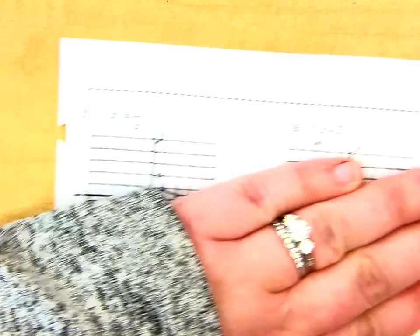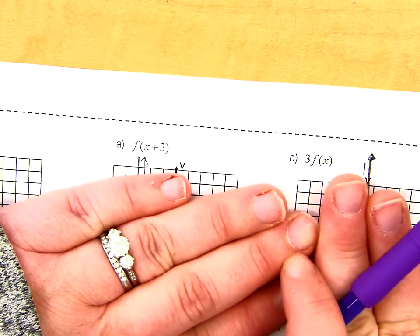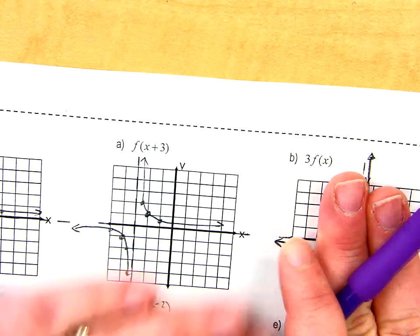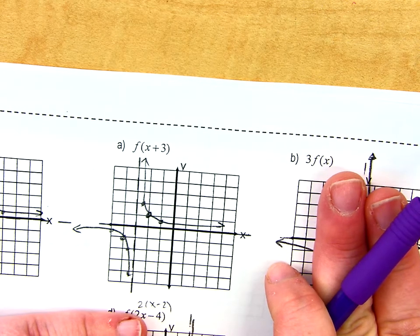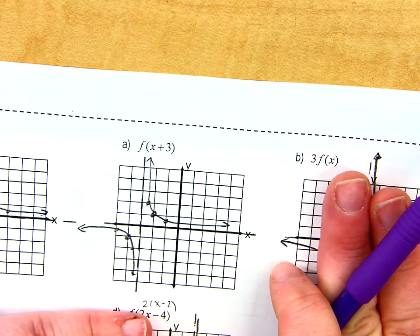So you should have this parent function, your reciprocal function, asymptotes at both axes. And letter A, what is that plus 3 doing? To the left 3. Yes. You should have picked up your graph. So your whole asymptote moves everything to the left 3.